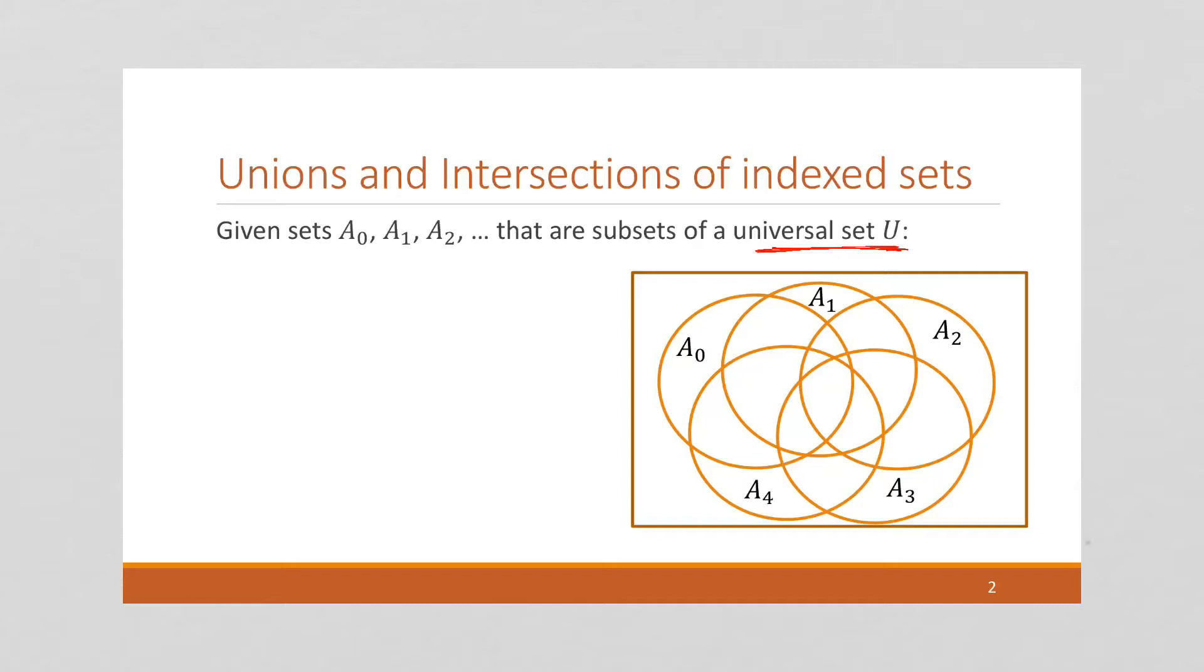What we're going to start with is the union from i equals 0 to n of A_i. So what this is, is A_0 union A_1 union A_2 union all the way up to union with A_n. So this is probably a new symbol for most people. It's very similar to the summation symbol or the product symbol that we've used before. It is an extra large U. You can find it in Microsoft Word and PowerPoint. It is one of the mathematical operators.